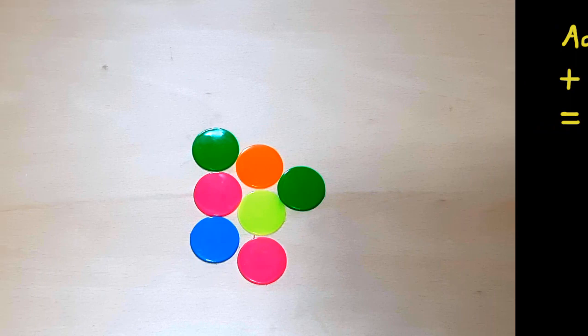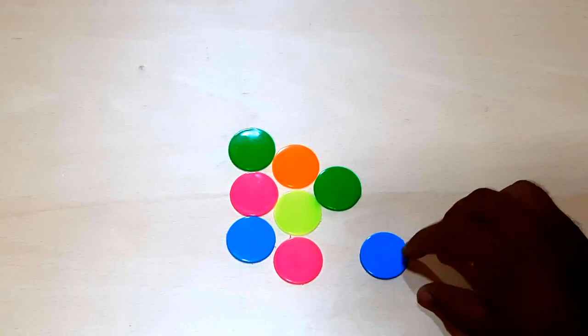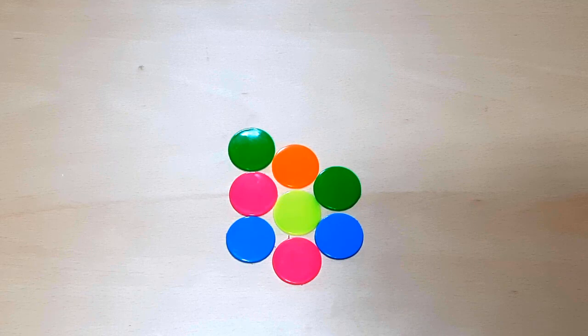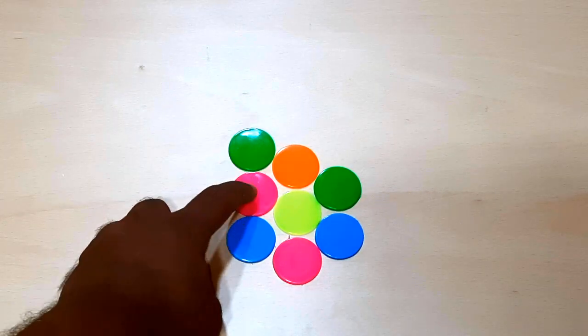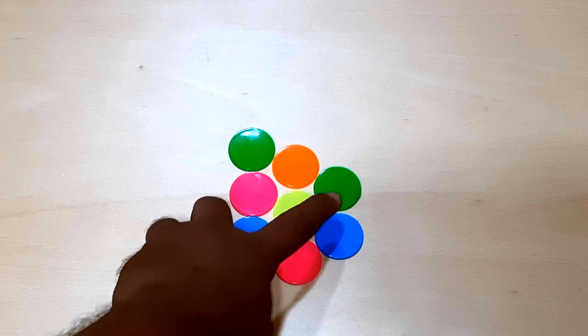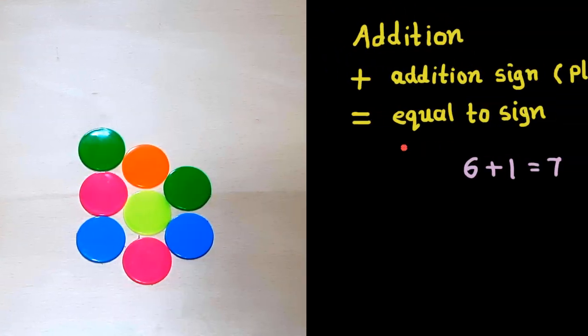Now let's add one more coin. Now pause the video and count all of these coins. 1, 2, 3, 4, 5, 6, 7, 8. So, we can say 7 plus 1 is equal to 8.